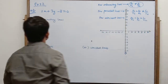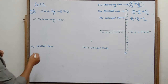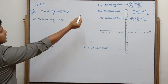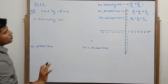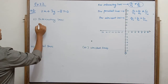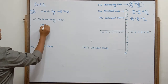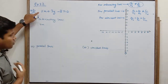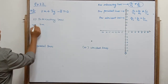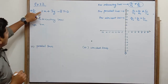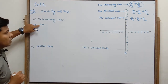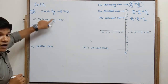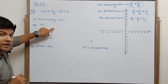तो let us understand this. Intersecting के लिए a1/a2 must not be equal to b1/b2. तो suppose मैंने 4x दे दिया — एक equation जिसका नाम 4x से शुरू होता है। तो a1/a2 = 2/4 = 1/2 हो गया। अब अगला वाला ratio half नहीं होना चाहिए।